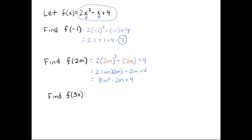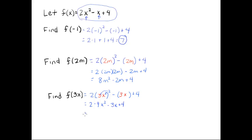Now let's do f of 3x. Once again, wherever I see an x, I'm going to open an empty set of parentheses, and this time I put 3x in those parentheses. So I have 2 times 3x squared minus 3x plus 4. We have to square both the 3 and the x, so 3 squared is 9, and we get x squared minus 3x plus 4, which equals 18x squared minus 3x plus 4.